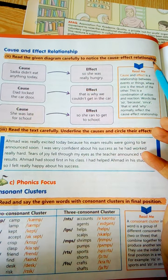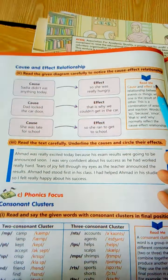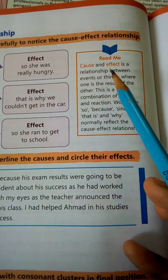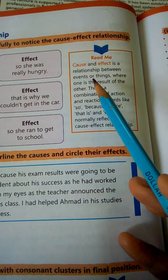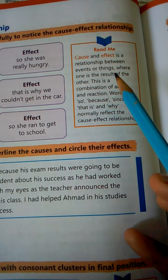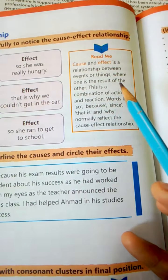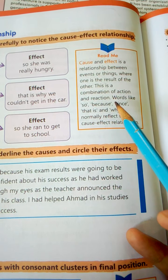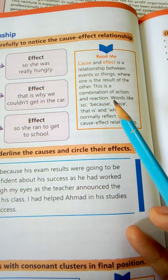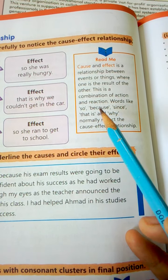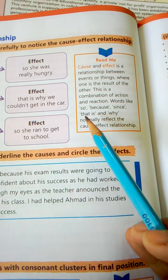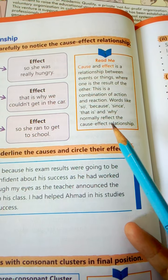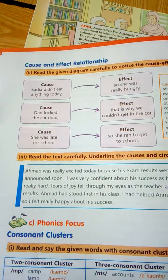Read the given diagram carefully to notice the cause and effect relationship. Cause and effect is a relationship between events or things where one is the result of the other. This is a combination of action and reaction. Words like 'so,' 'because,' 'since,' 'that is,' and 'why' normally reflect the cause and effect relationship.